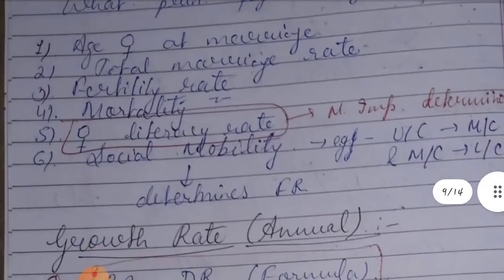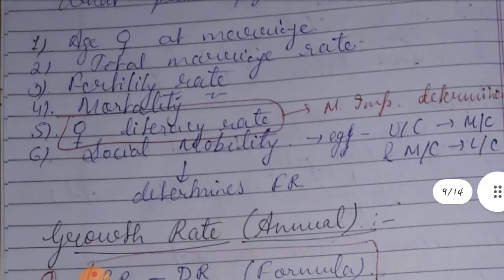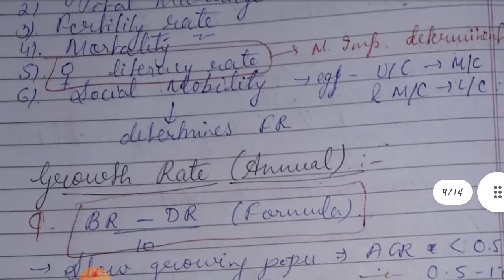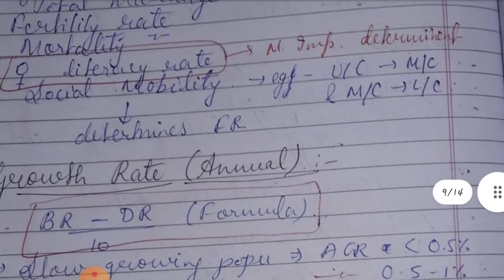These 6 principles are: 1. Age at female marriage, 2. Total marriage rate, 3. Fertility rate, 4. Mortality rate, 5. Literacy rate, and 6. Social Mobility. For example, social mobility includes upper class, middle class, and lower class.